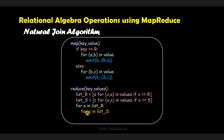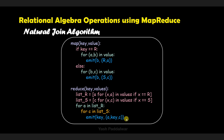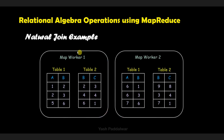Similarly, we form a list for relation S containing only those values where the attribute is uncommon between the two tables. Once done with the two lists, we iterate over both lists simultaneously and emit key-value pairs where the value is a tuple of three elements: A (the uncommon attribute from the first relation), the key (B), and C. That was the algorithm.